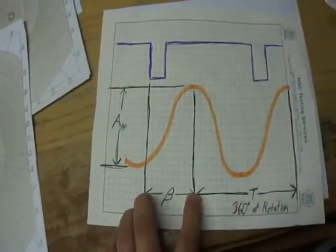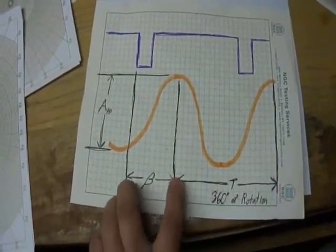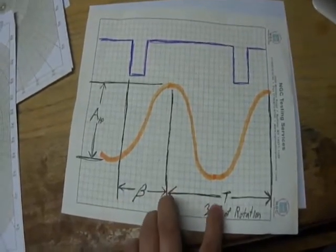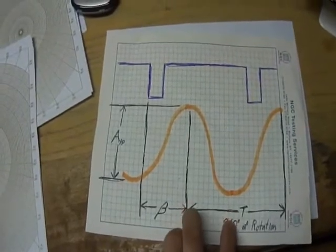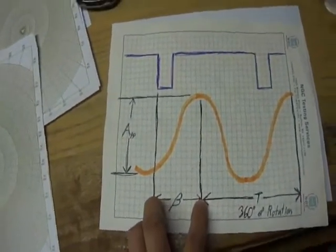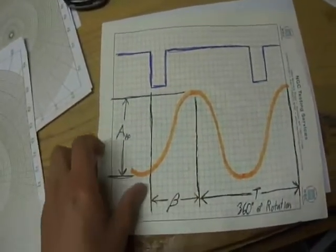However, I can convert that. I can actually take this and divide it by my T, my period, and that will tell me how many degrees of rotation my beta is.